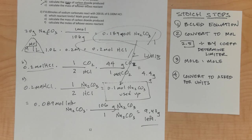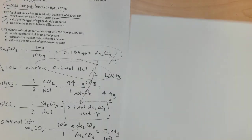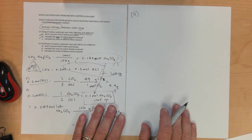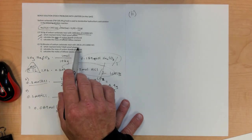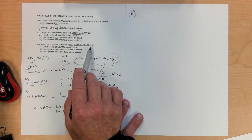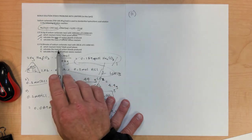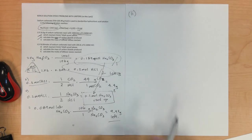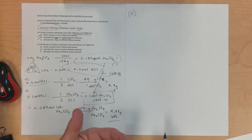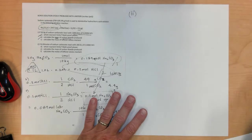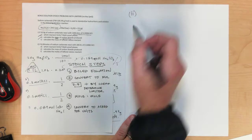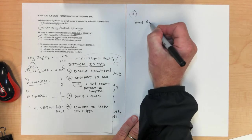One more problem left on the practice test — problem number 2, the last one. It says: if 8 moles of sodium carbonate react with 200 liters of 0.1 molar HCl, which limits? Calculate the mass of carbon dioxide produced and calculate the moles of the leftover. It's the same problem as before with different numbers. I'd encourage you to pause the video and try this yourself before watching. Step 1: balanced chemical equation — done for us. Step 2: convert to moles — we're already given 8 moles of Na2CO3.